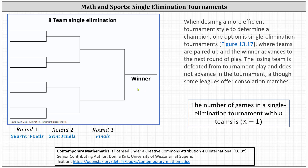Looking at the diagram on the left, this would be the setup for an eight-team single elimination tournament where the eight teams are listed on the far left. This would be considered round one. If the tournament is larger, once we're down to four games, it's called the quarterfinals. The winners advance, the losers are out. The winners play in round two, which once there are only two games remaining is called the semifinals.